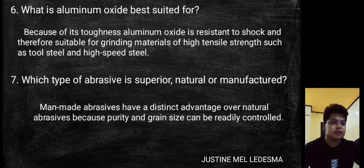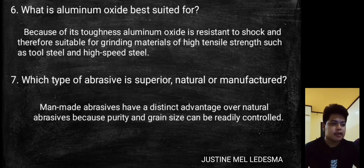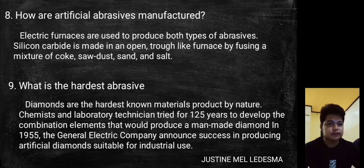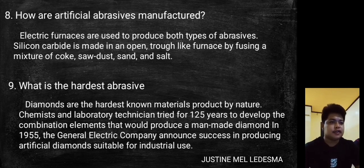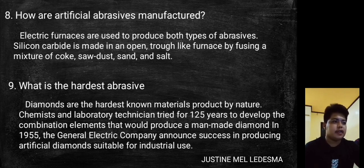Man-made abrasives have a distinct advantage over natural abrasives because purity and grain size can be readily controlled. Electrical furnaces are used to produce both types of abrasives. Silicon carbide is made in an open trough-like furnace by fusing a mixture of coke, sawdust, sand, and salt.